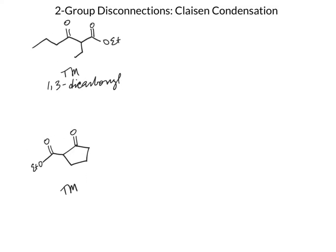Our focus is going to be on the alpha-carbon. We can disconnect on either side, but if we disconnect on this side, we're going to get more nearly equal components in our starting materials — always a nice goal for a disconnection. The alpha-carbon, as usual, is going to be our nucleophile, acting as an enolate, which means this adjacent carbon was the electrophile.